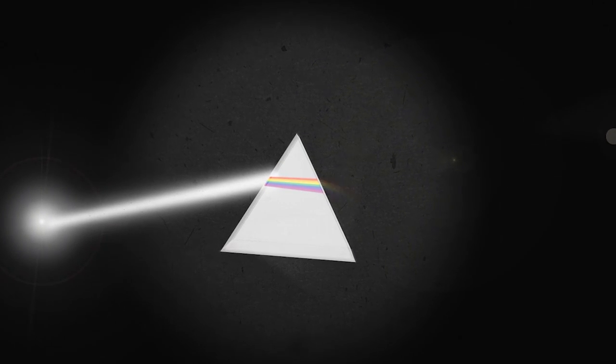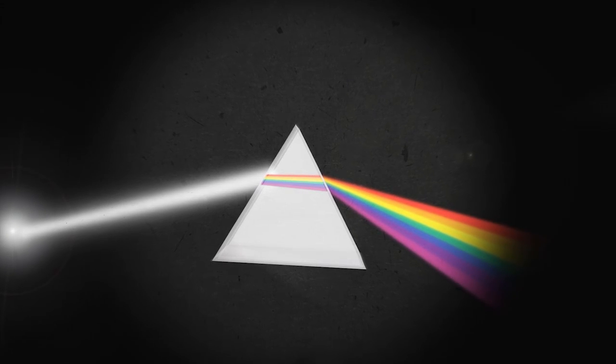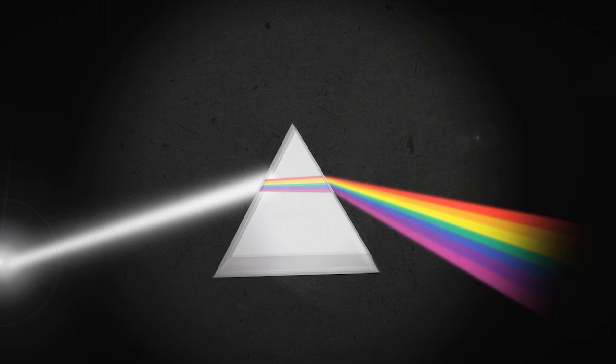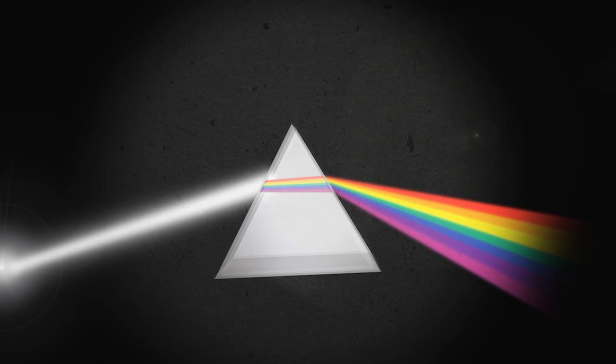Each color in a ray is bent at a different angle, allowing seven colors to be seen. The red light gets bent the least, while the violet light bends the most.